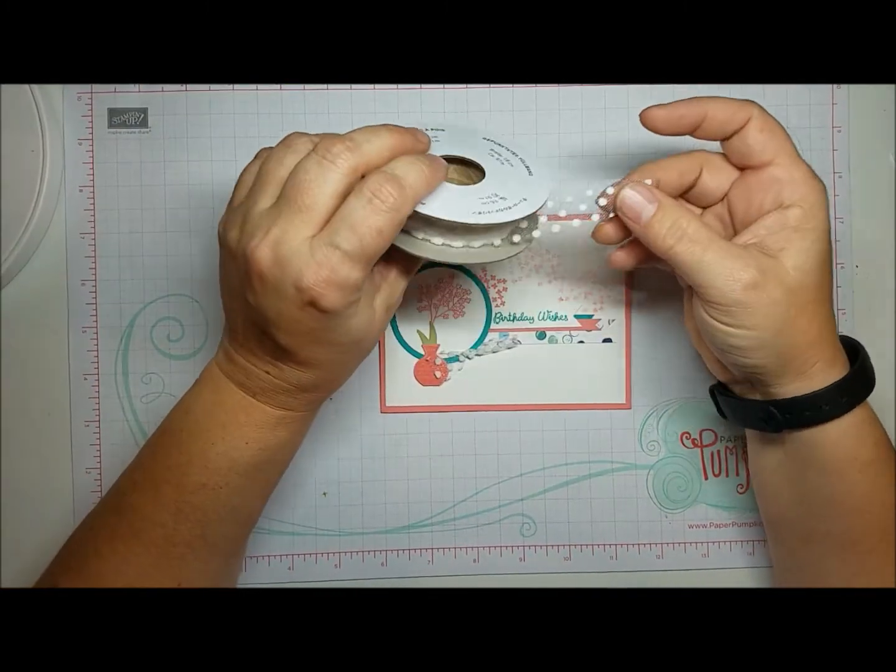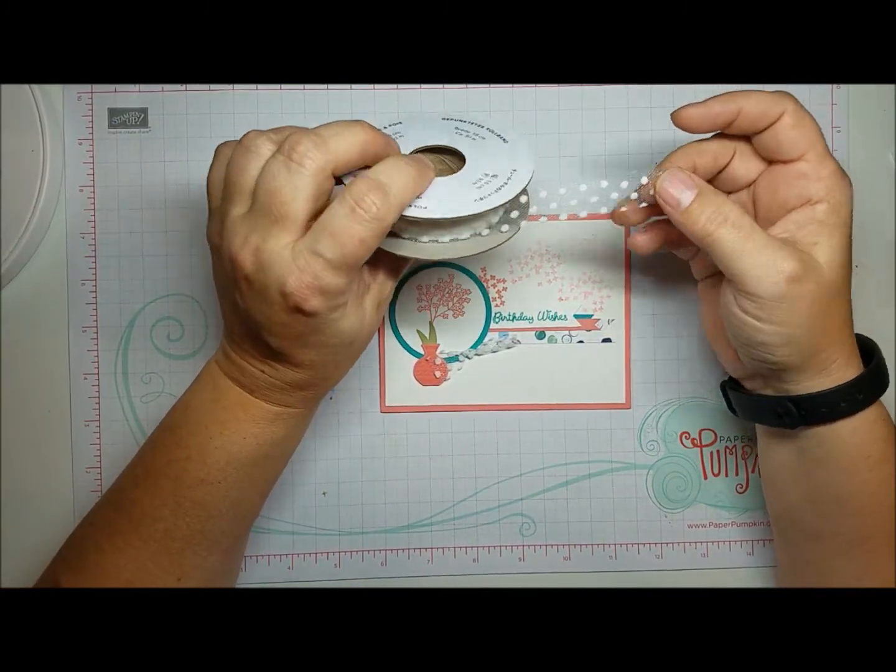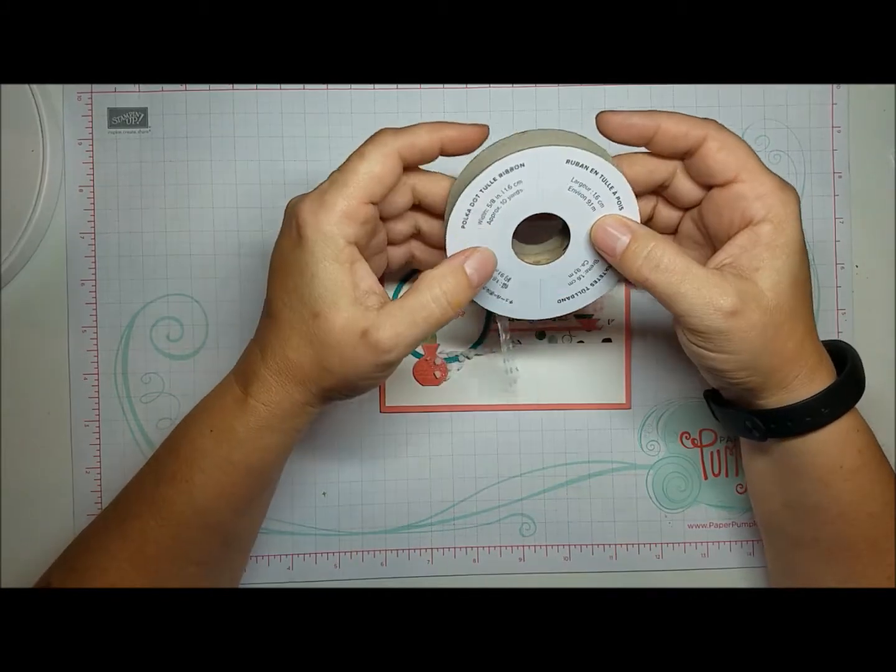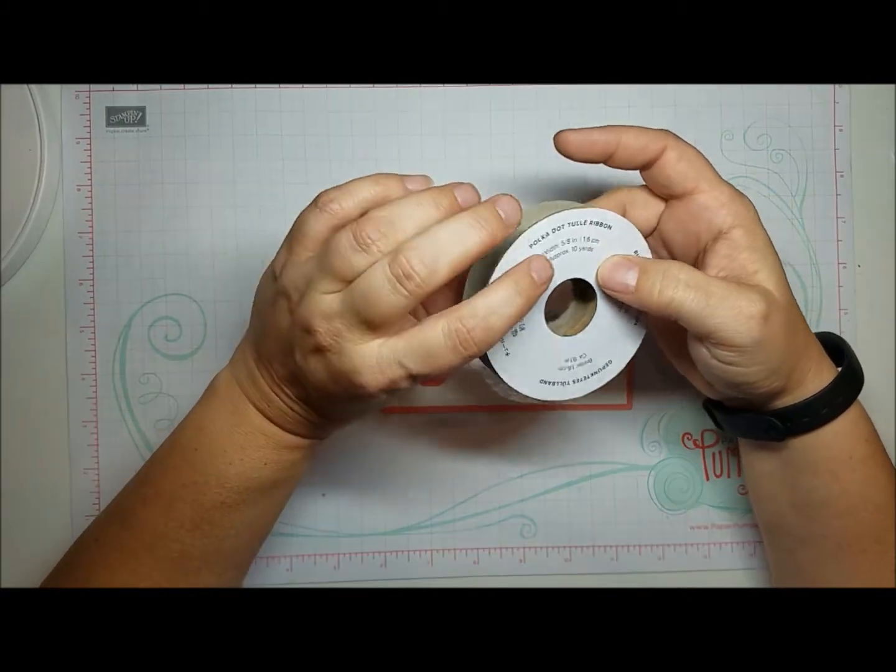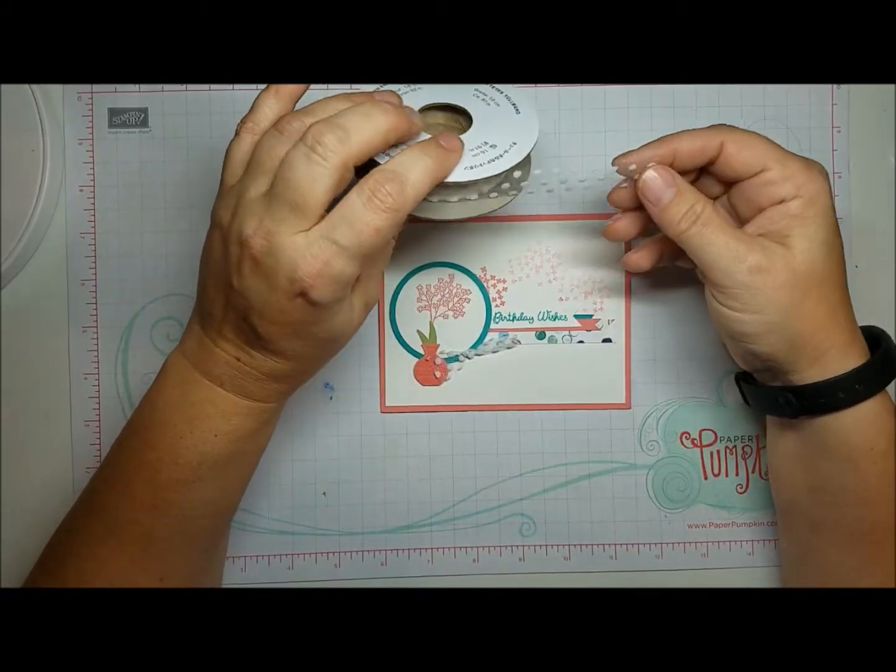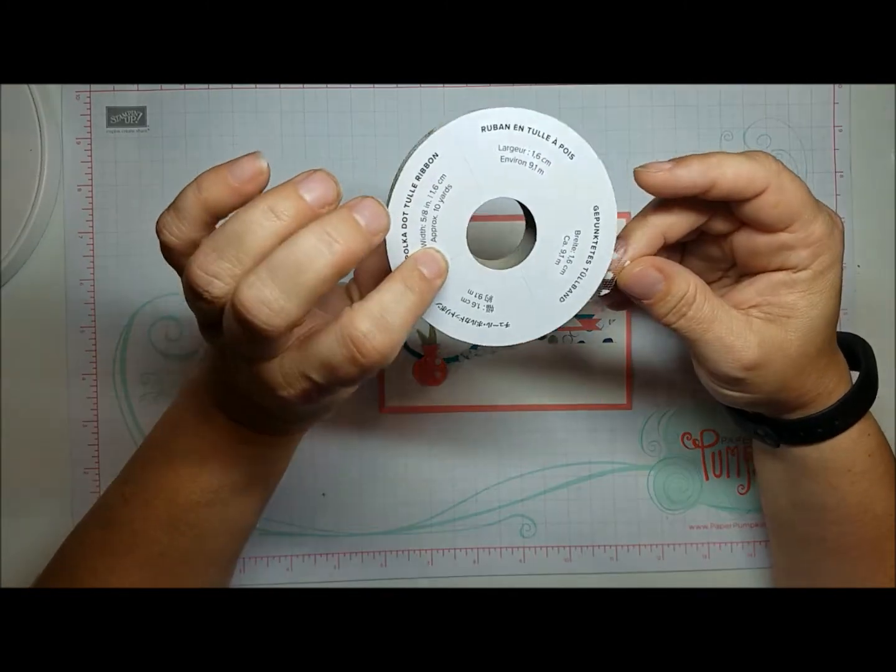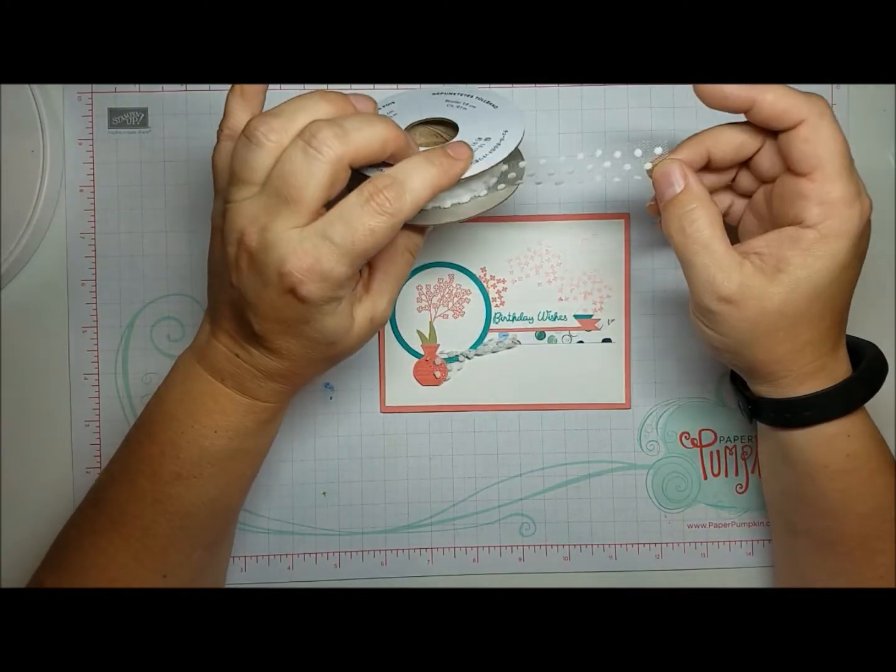This is a new product in this year's catalog. It is called polka dot tulle ribbon and it is five-eighths, so it's over a half inch wide.